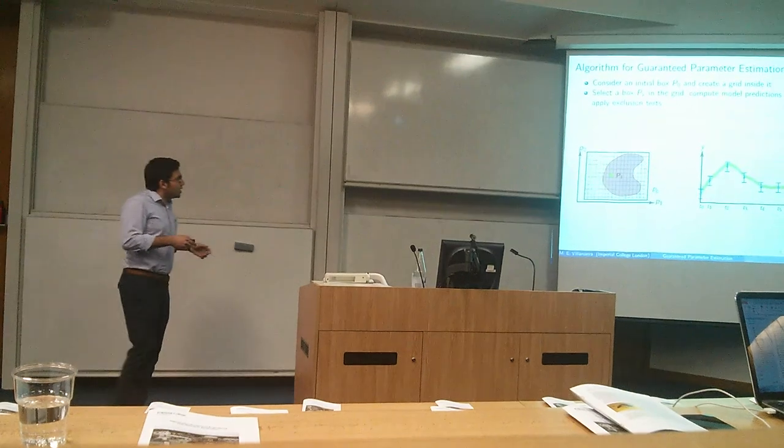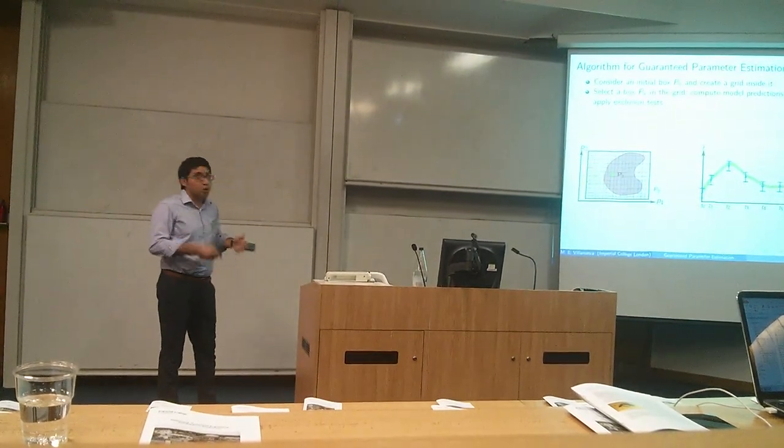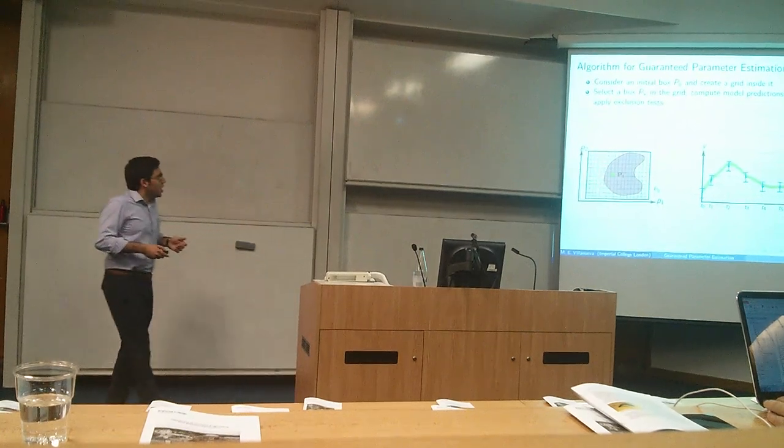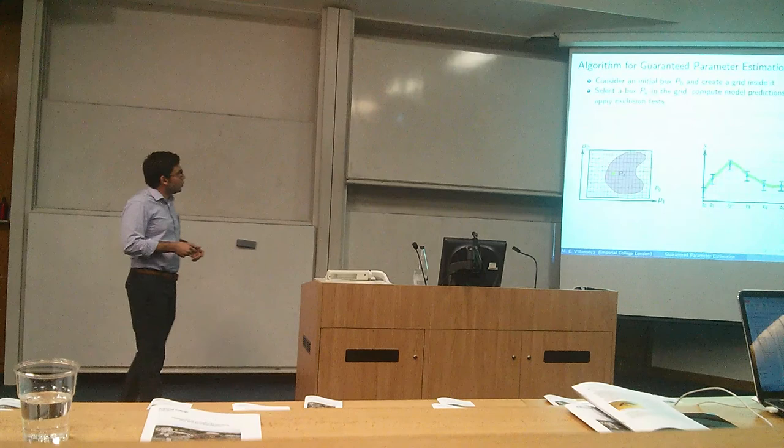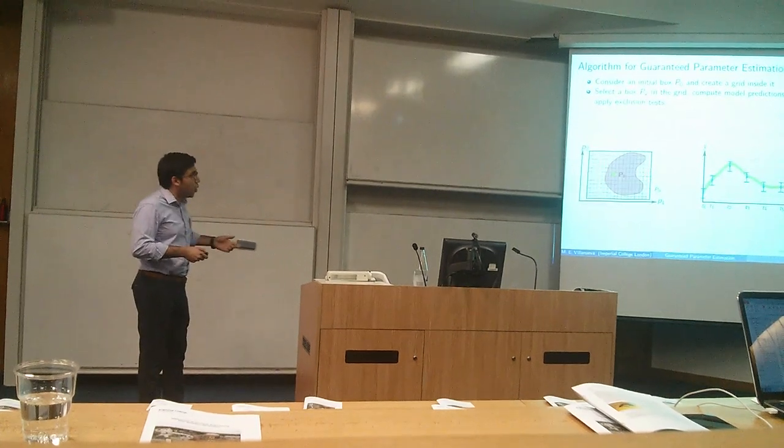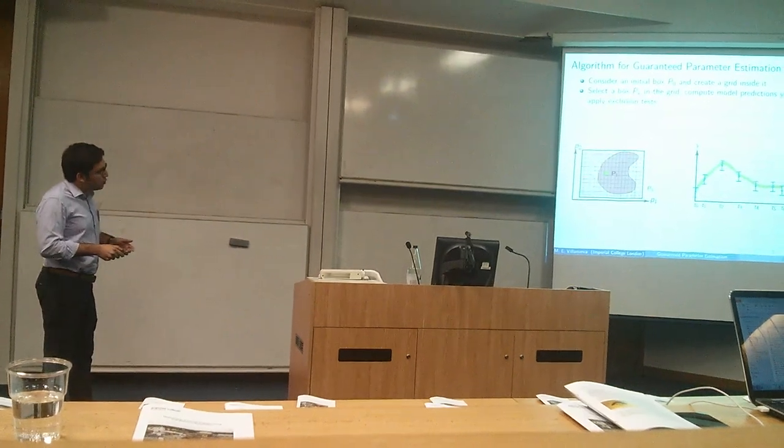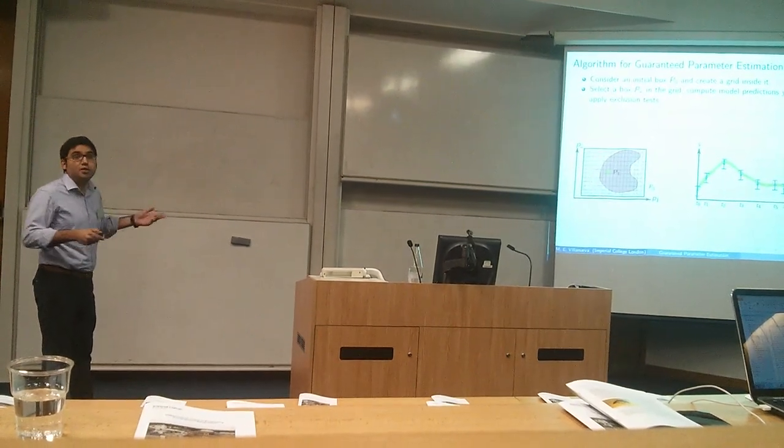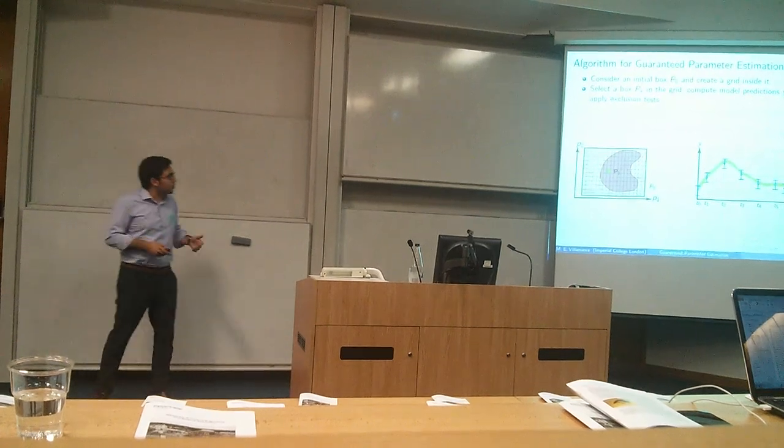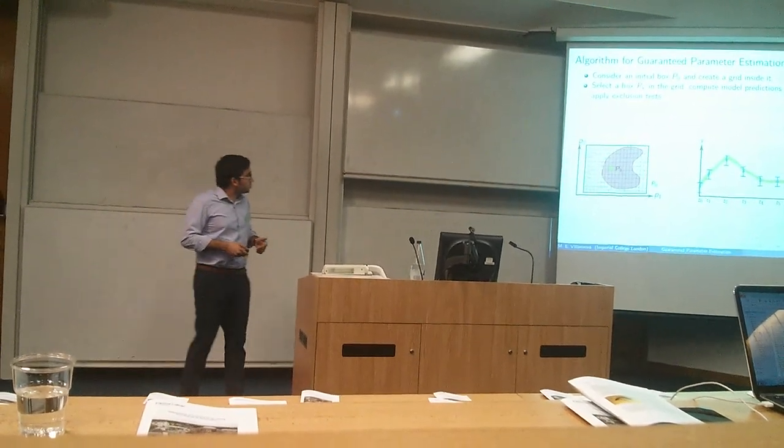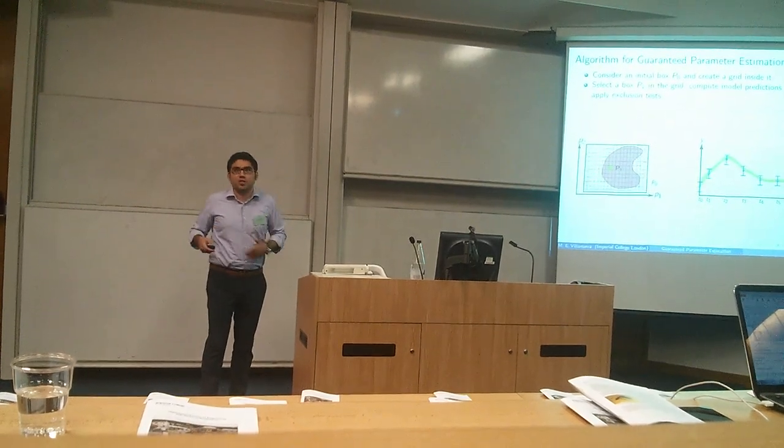And then we select a box, and we compute the model predictions, and we apply some what we call exclusion tests. For example, in here we take this little box in GreenP1, we compute the model predictions, and then we can see that, for all the measurements, my model prediction is within the given error box. From that, we can conclude that the box is within the region that I want to estimate.